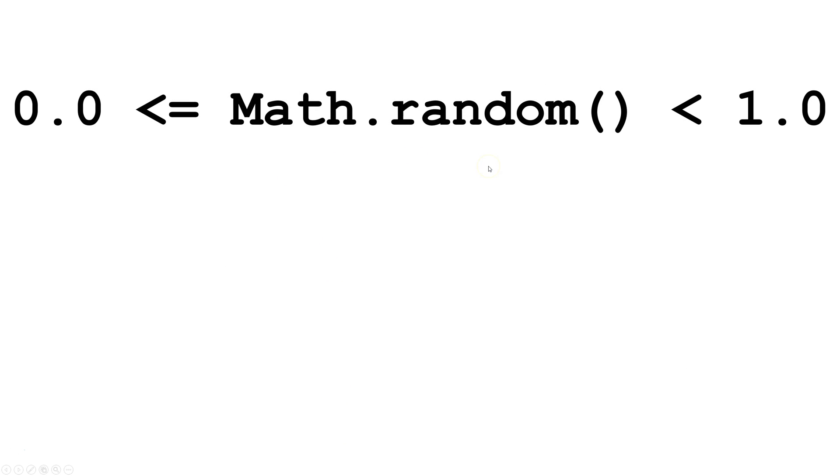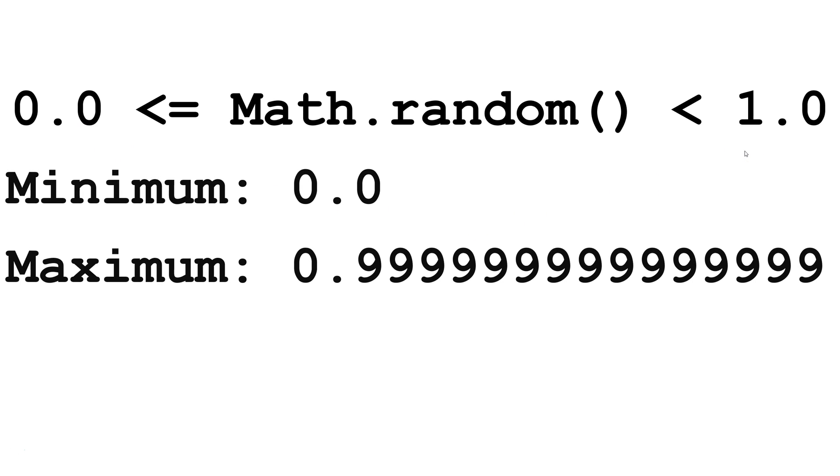Math.random will return a value that is greater than or equal to 0.0 and less than 1.0. That means the minimum value it can return is 0.0 and the maximum value is 0.9 repeating. It's important to understand Math.random will never return 1.